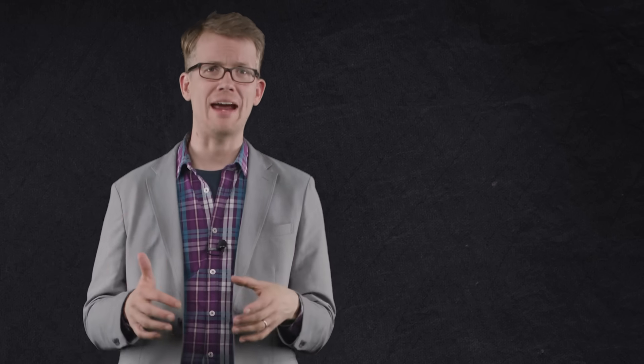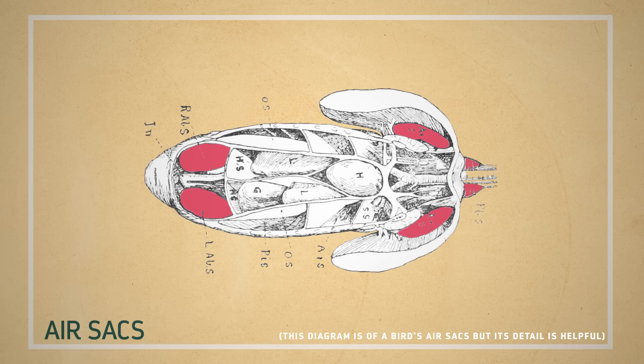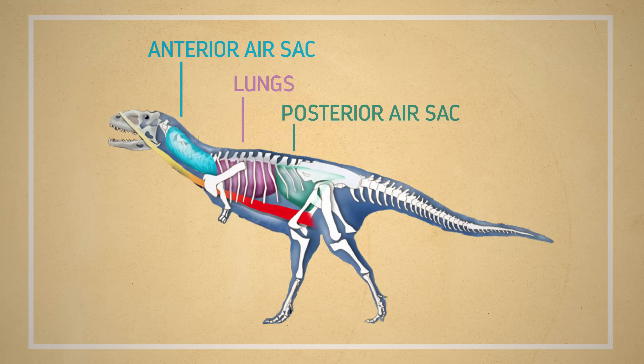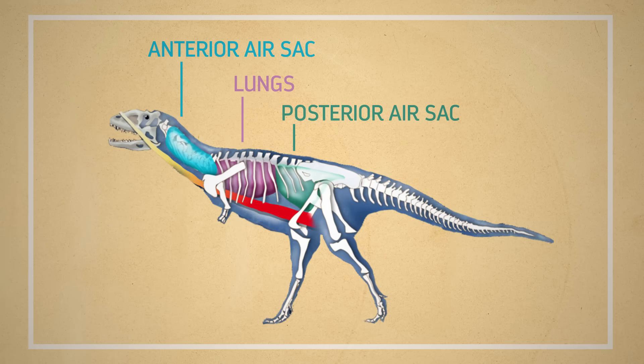Dinosaurs also had another evolutionary advantage. Their skeletons had a special feature that mammals lacked, a sophisticated system of air sacs. These sacs were basically pockets of soft tissue that were connected to the lungs. Think of them as biological balloons. Some of these sacs sat in the body cavity, next to bones, usually in the neck, back, and hips. But others ran inside the bones themselves. These air sacs helped shape the dinosaur's skeleton and allowed the bones of the biggest dinosaurs to remain light without sacrificing strength.